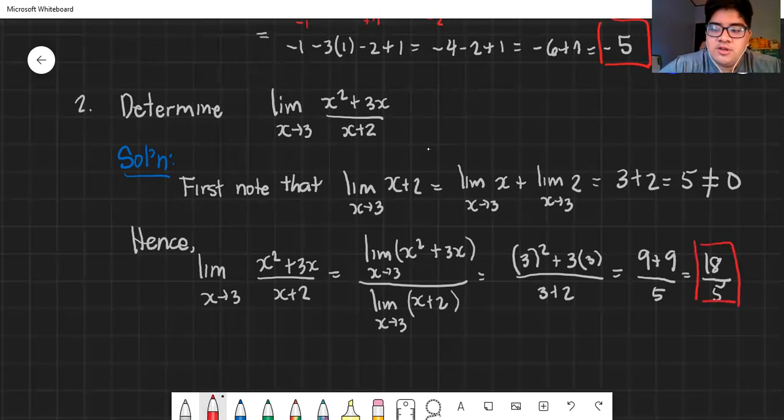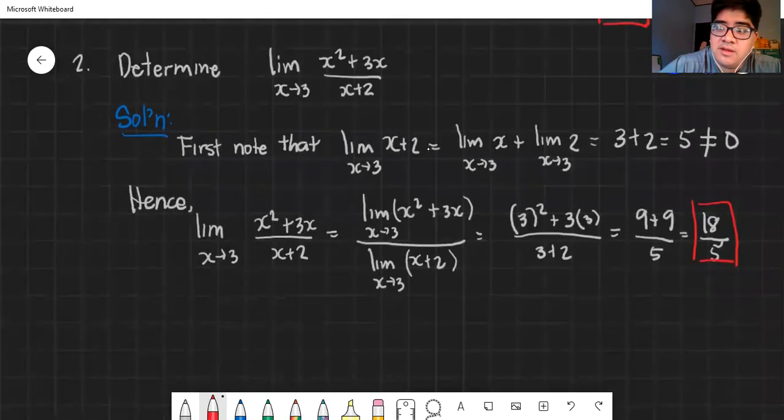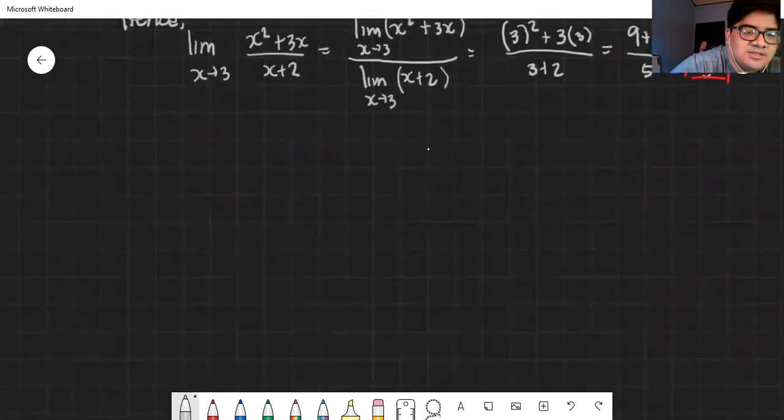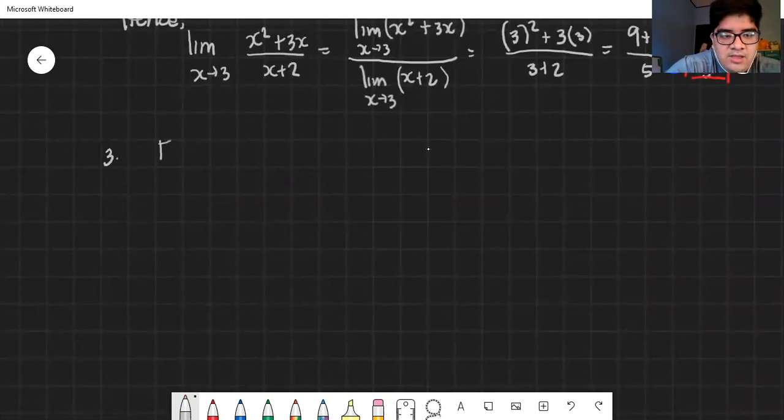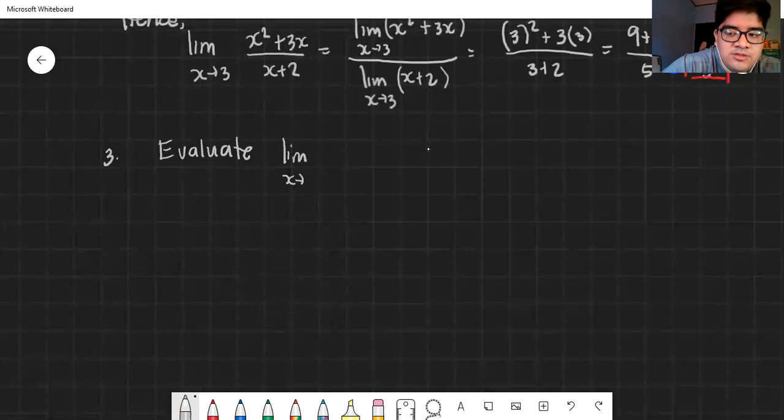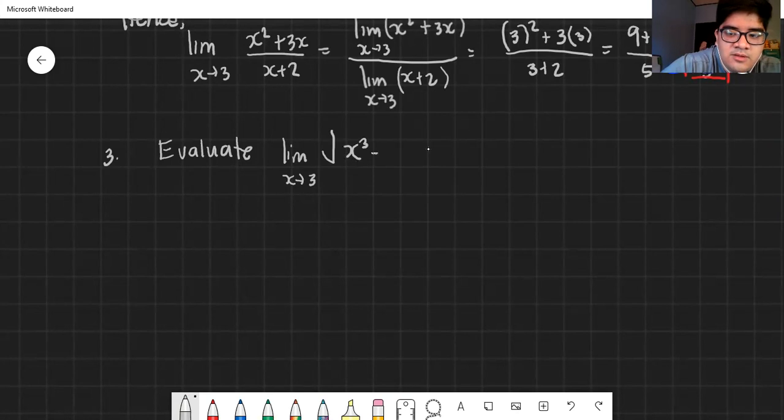Now we have a polynomial example, we have a rational expression example. What about a radical expression? An expression involving radicals. Number 3, this is the last example of this video. Evaluate the limit as x approaches 3 of the square root of x cubed minus 3x squared plus 9.